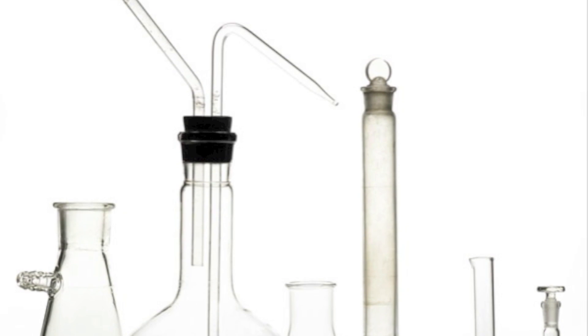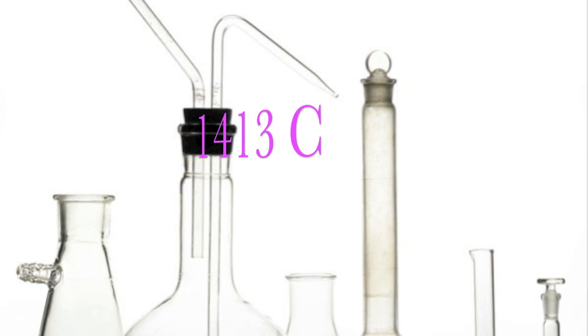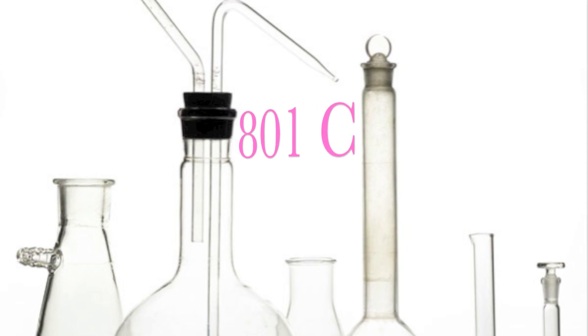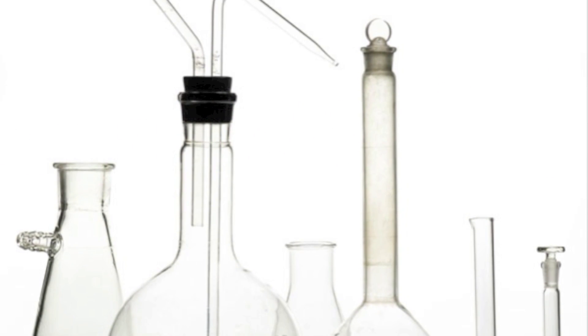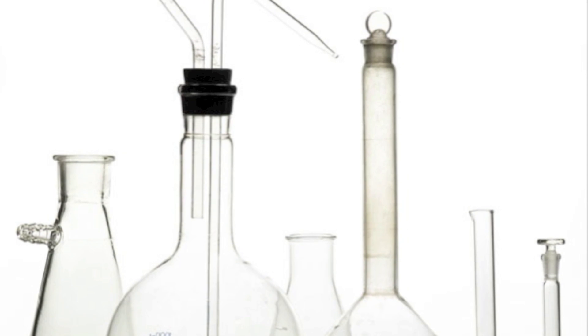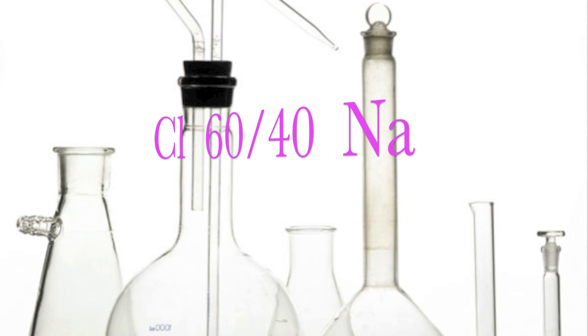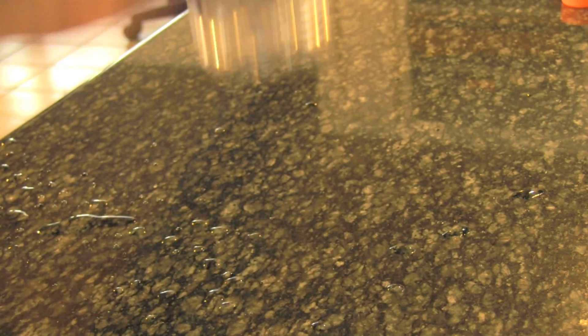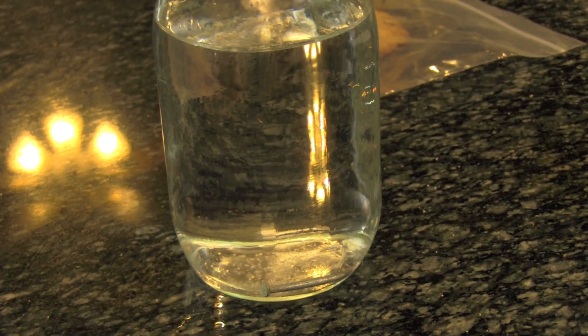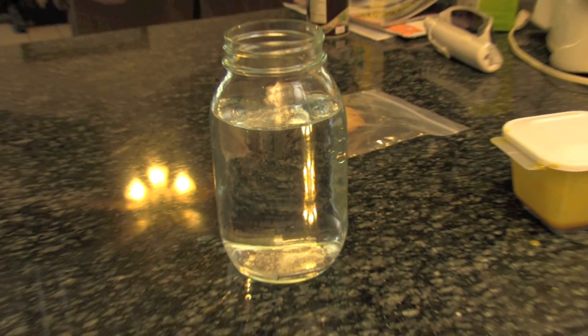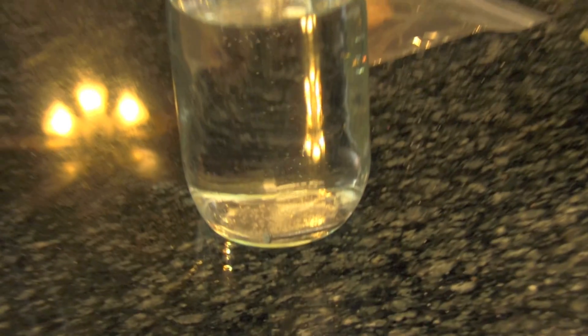Here's the breakdown: it appears as white crystals, boiling point is 1413°C, melting point 801°C, density is 2.165 grams. It is odorless. The chemical itself is 60% chlorine and 40% sodium. It's also a really good electrolyte — it conducts electricity.